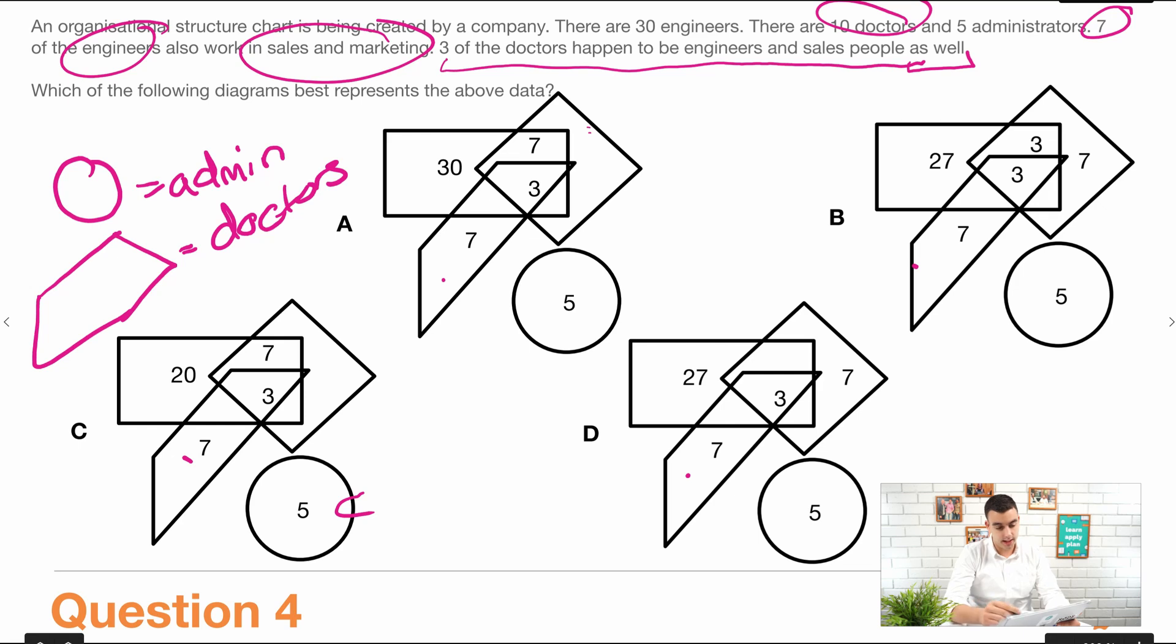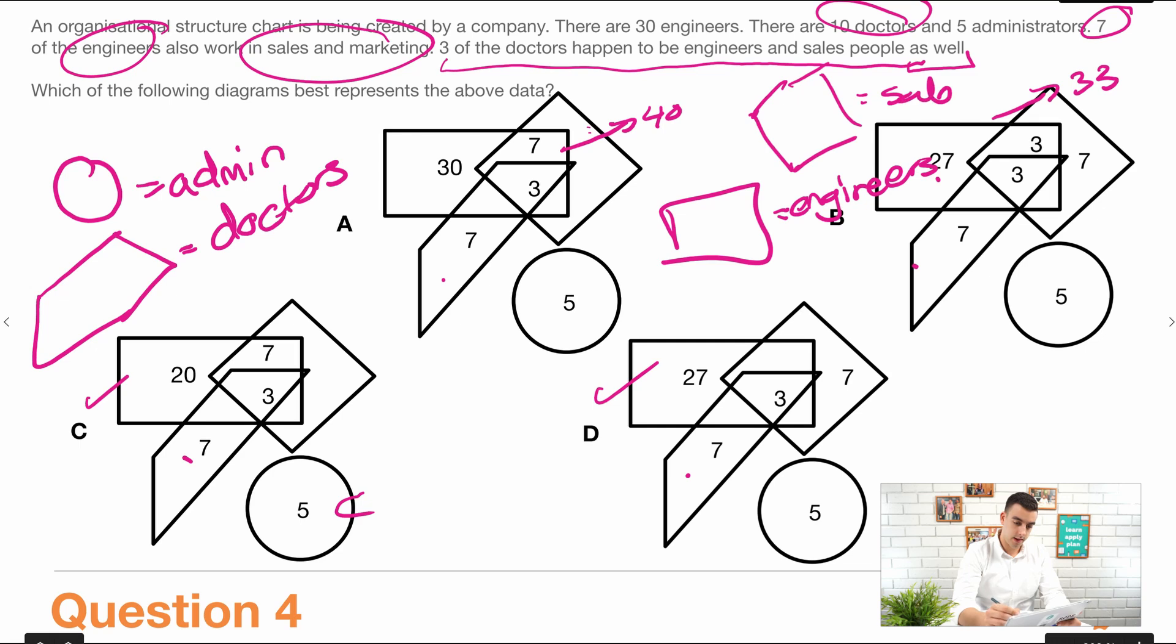So notice how the rectangle always nearly adds up to 30. So here it adds up to 30. Here it adds up to 30. Here it adds up to 40. Here it adds up to 33. So I think it's a fair guess to say that the rectangle is engineers. And then finally, that leaves the diamond of sales and marketing.